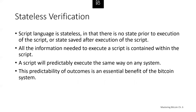The Bitcoin transaction script language is stateless — there is no state prior to or saved after script execution. All information needed to execute a script must be contained within the script. A script will predictably execute the same way on any system; if your system verifies a script, every other system in the Bitcoin network will also verify it, meaning a valid transaction is valid for everyone. This predictability of outcomes is an essential benefit of the Bitcoin system because it ensures the blockchain can reach consensus.